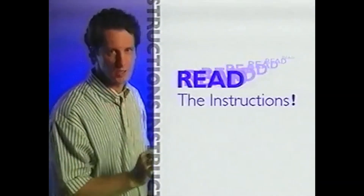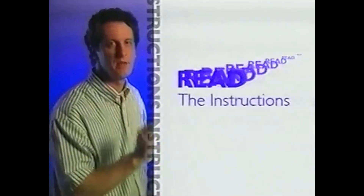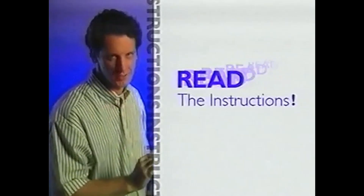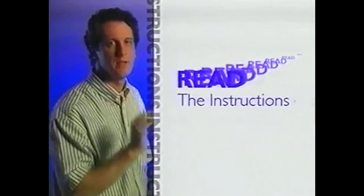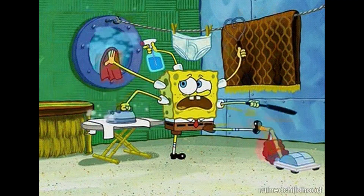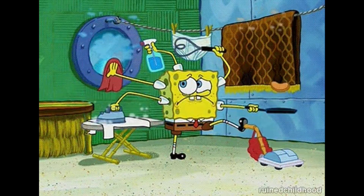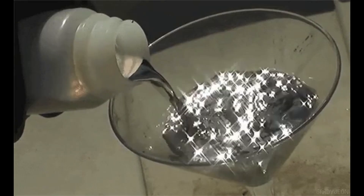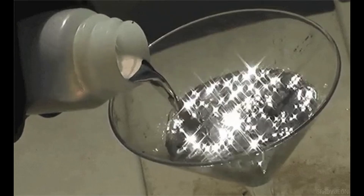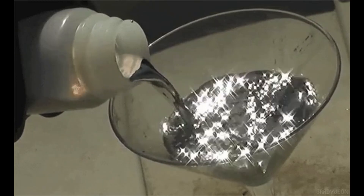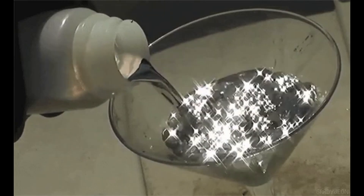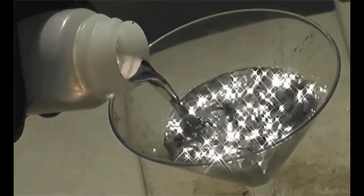Number 3: Read and follow the diffuser instructions. Before using the oil diffuser, carefully read the manufacturer's instructions and follow the recommended guidelines for usage, cleaning, and maintenance. Number 4: Prepare the oil diffuser. Fill the diffuser's water reservoir or oil tray with clean water as per the instructions provided. For most ultrasonic diffusers, add water up to the marked level.